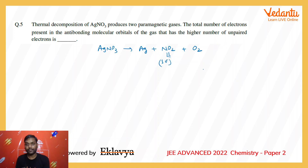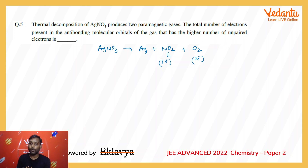O₂ has two unpaired electrons in the last orbital, pi star — that is why it is paramagnetic. So basically you have to find out the total number of electrons in the anti-bonding orbitals of O₂, because it has the higher number of unpaired electrons. Writing the electronic configuration of O₂ using MOT: σ1s², σ*1s², σ2s², σ*2s², σ2pz²...